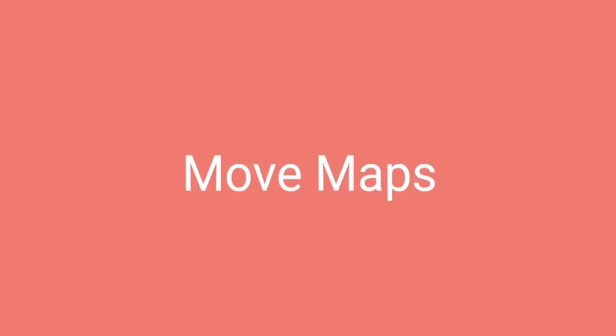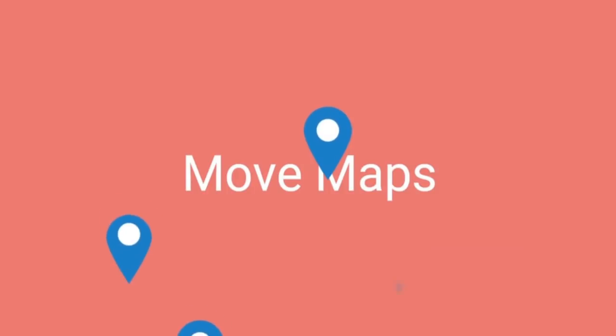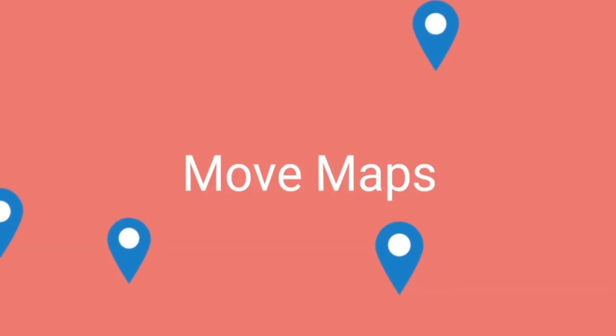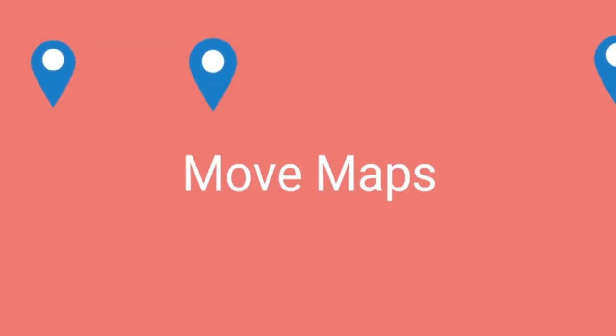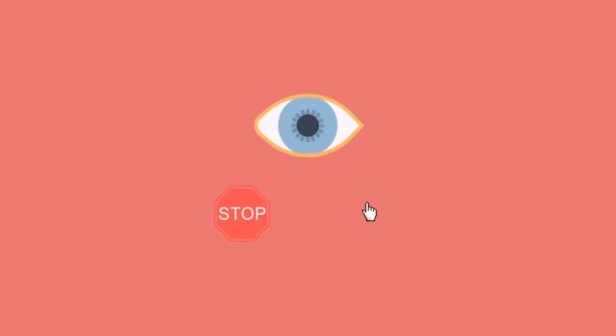Move maps show where desktop users move and rest their mouse as they navigate your page. Hotspots highlighted in a move map show you where your users are pausing their mouse. Market research has found there is a link between where people look and where their mouse is, making move maps a great way to get an indication of what people are looking at on your website.